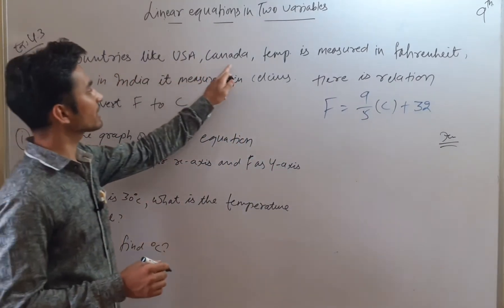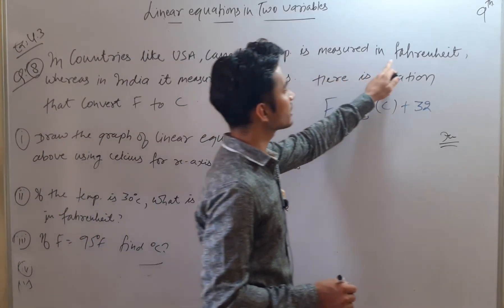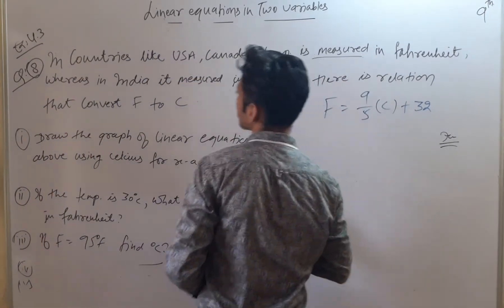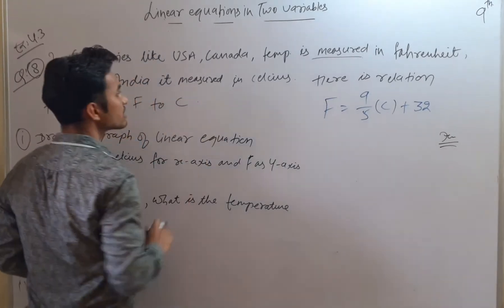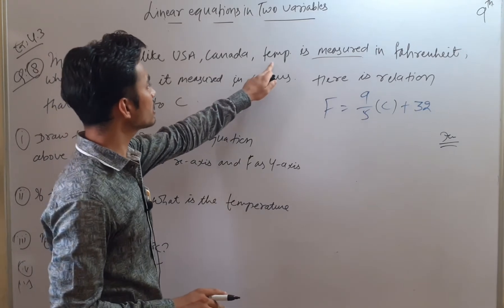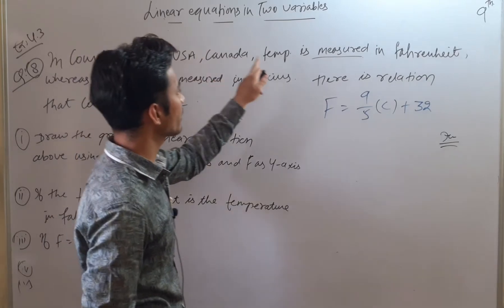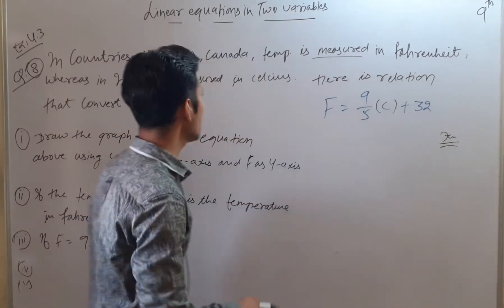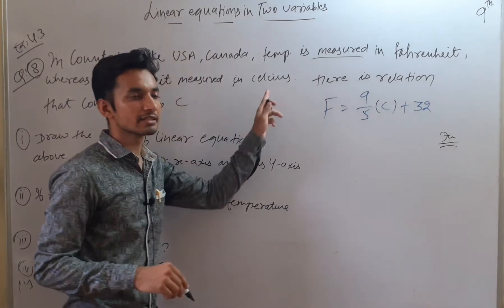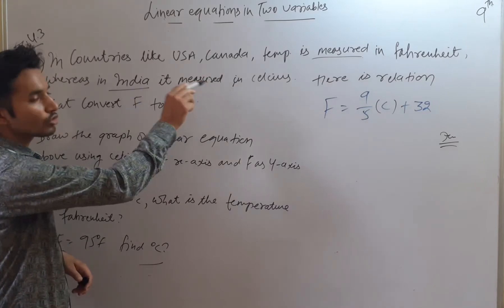In countries like USA and Canada, temperature is measured in Fahrenheit, whereas in India it is measured in Celsius. So there is a difference in the unit of temperature measurement between these countries.